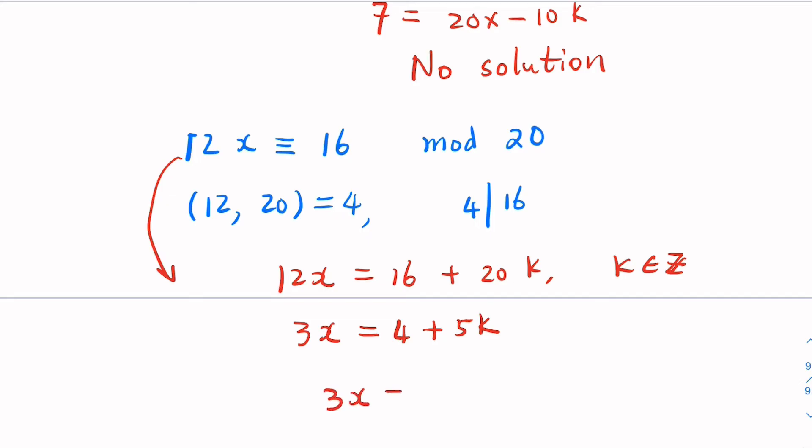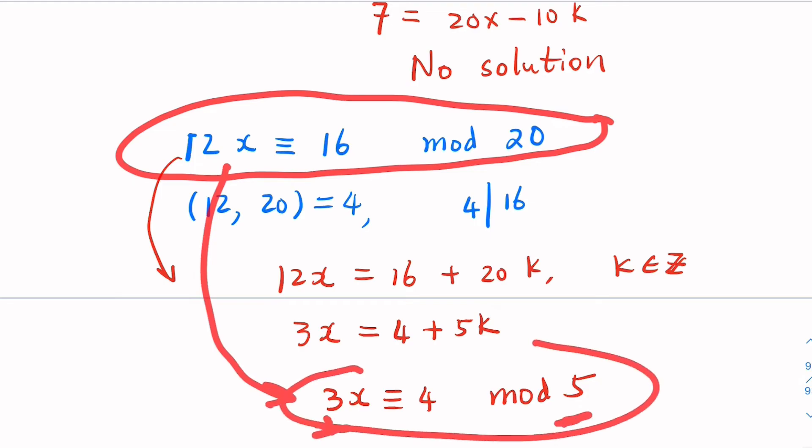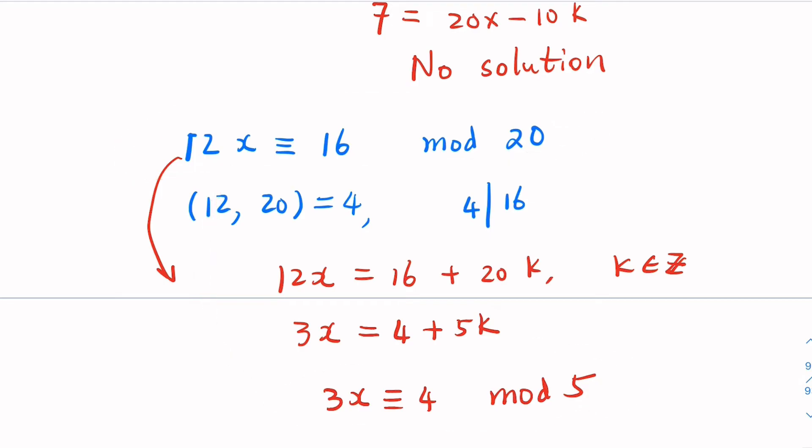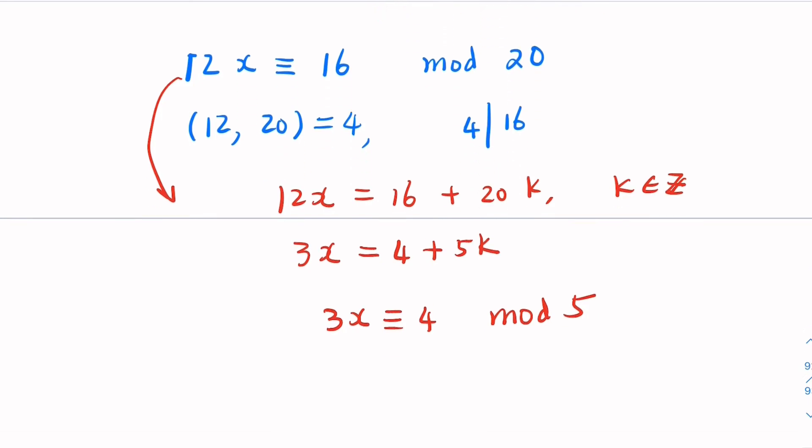What you have is 3x equals 4 plus 5k. Now change to modulus equation here. 3x congruent to 4 mod 5. So in other words, we can turn this congruence equation into a new form where 3 and 5 are relatively prime. Earlier, we know how to solve this problem for the relatively prime. So in this case, we solve it, which is 3 mod 5. Again, I skip the steps, because this modulus is very small. It's very easy to find.